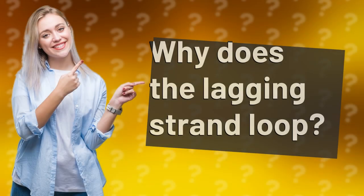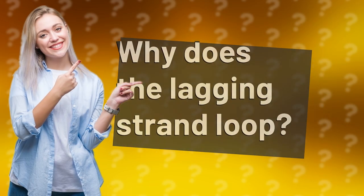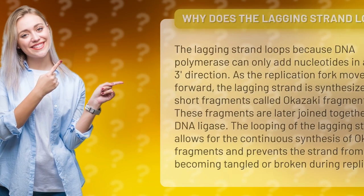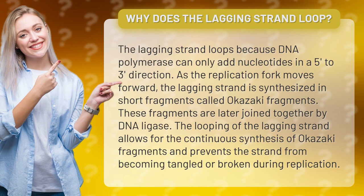Why does the lagging strand loop? The lagging strand loops because DNA polymerase can only add nucleotides in a 5' to 3' direction. As the replication fork moves forward, the lagging strand is synthesized in short fragments called Okazaki fragments.